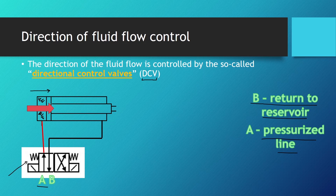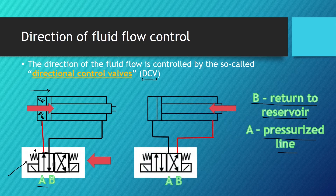Now, what happens if we push this directional control valve to the left side, changing from position one to position two? The pressurized fluid now goes to the back of the piston, pushing the piston and piston rod to the left side — in other words, retracting the cylinder. The other side fluid goes back to the tank through line B. This is why the direction of fluid flow directly influences the direction of the force exerted, or torque if we're talking about rotational hydraulic motors.